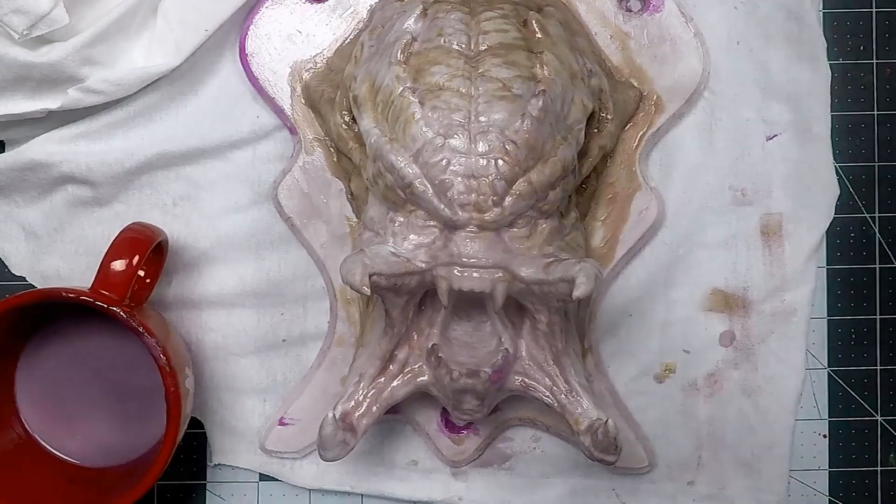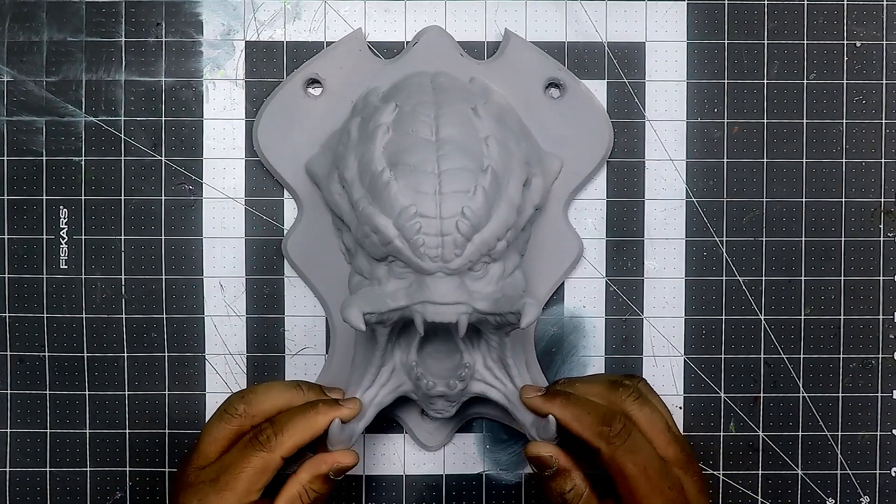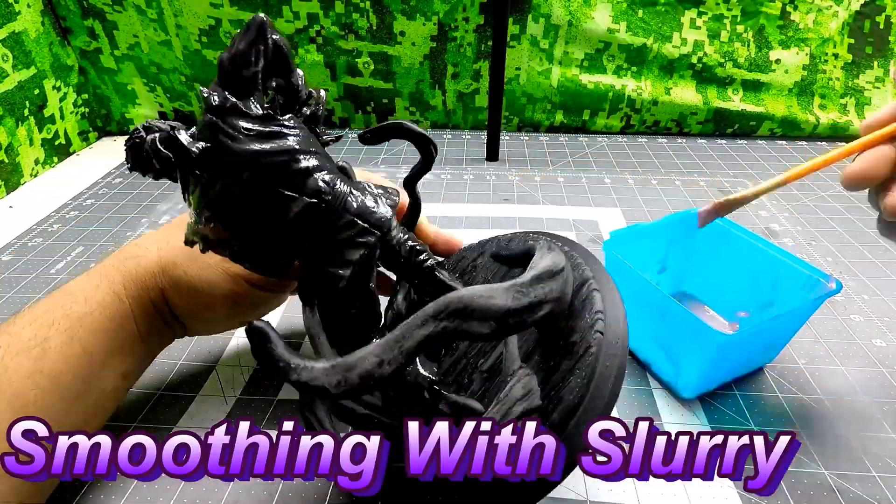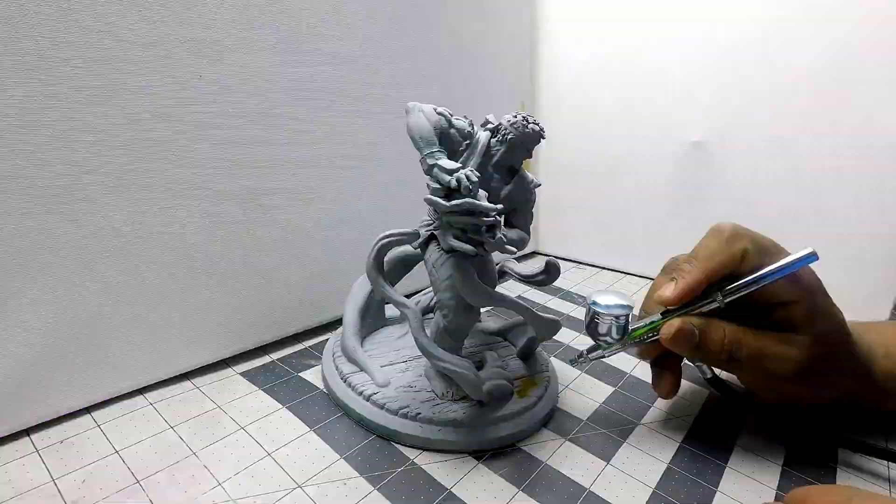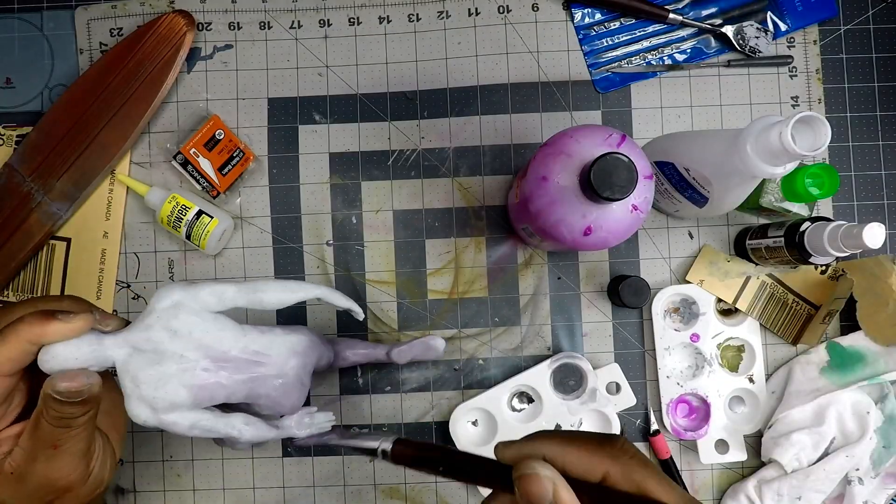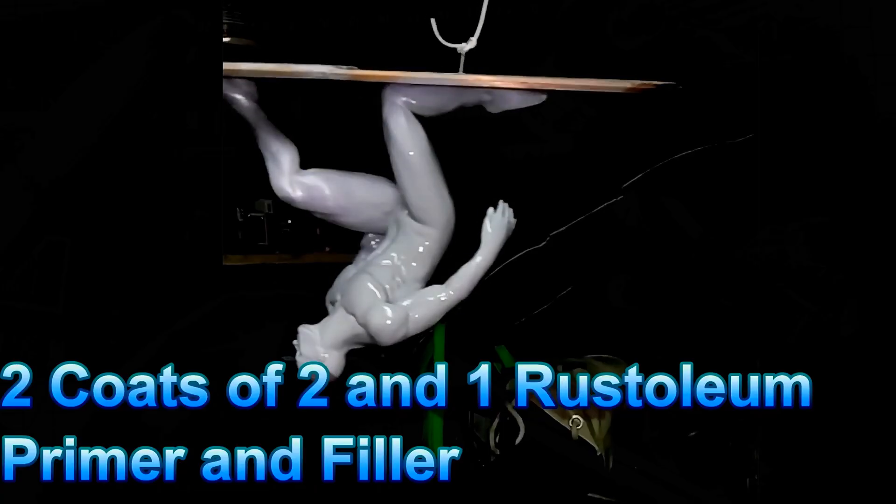So this is the Predator I used the slurry on. I use a decent amount, use some paint, primer, and then finish it up. Same thing with the Ryu. Exact same process. Smooth, no layer lines, and then with my Silver Surfer, the exact same process.